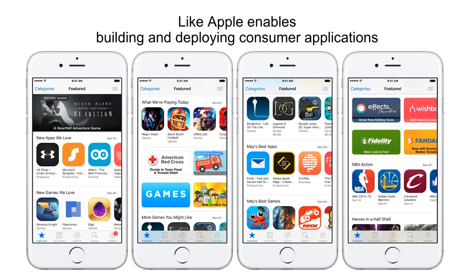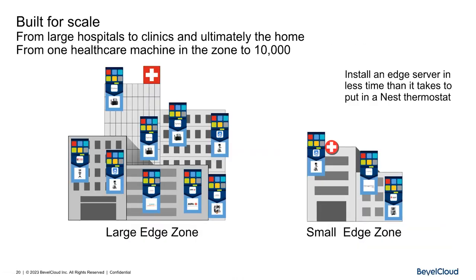We built for scale — from very large edge zones to clinics to ultimately the home, and from one healthcare machine in the zone to 10,000. We engineered all this during COVID, so we went global almost on day one. We engineered it so you could ship the edge server and it would take about the same time as deploying a Nest thermostat to bring an edge server online within a zone — and we actually achieved this last year in Delaware.